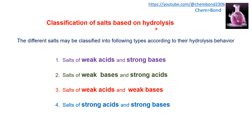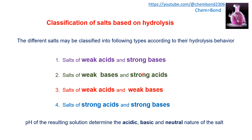Salts can be classified based on their hydrolysis behavior into: salt of weak acid and strong base, salt of weak base and strong acid, salt of weak acid and weak base, and salt of strong acid and strong base. This classification is based on the resultant pH, which determines the acidic, basic, or neutral nature of the salt.